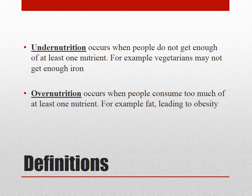Under nutrition occurs when people don't get enough of at least one nutrient. A good example might be vegetarians - they might not get enough iron because they don't eat meat. The opposite of that is over nutrition, and that's when people eat too much of at least one nutrient. Today we're going to look at obesity, which can result from eating too much fat or too many carbohydrates.